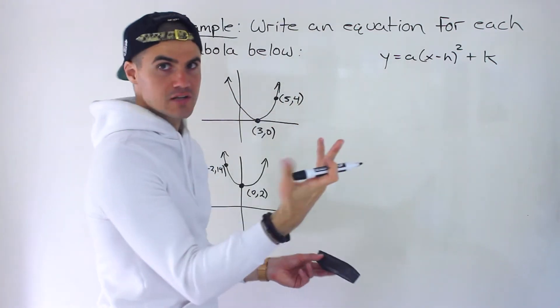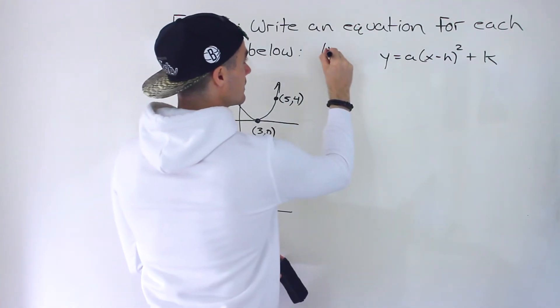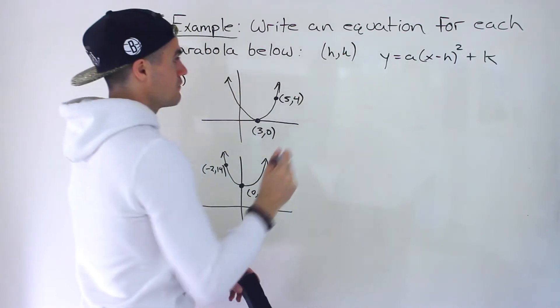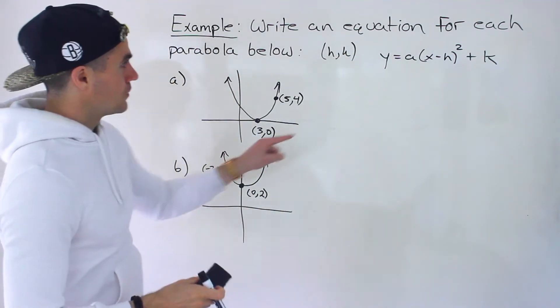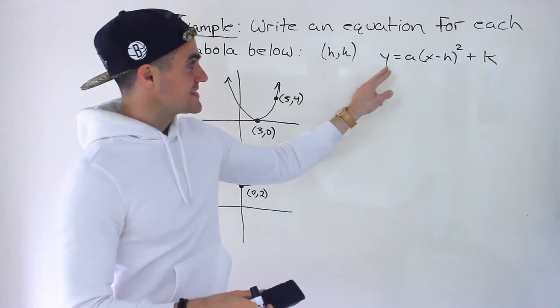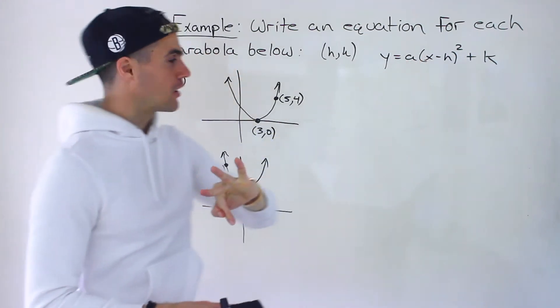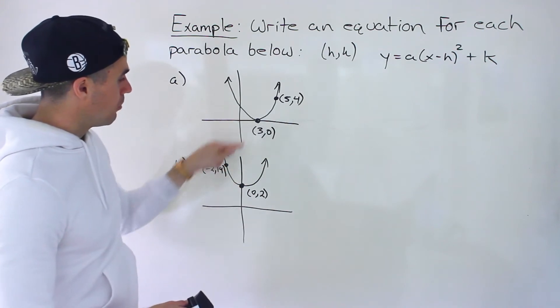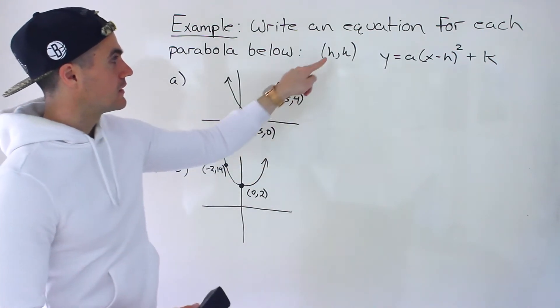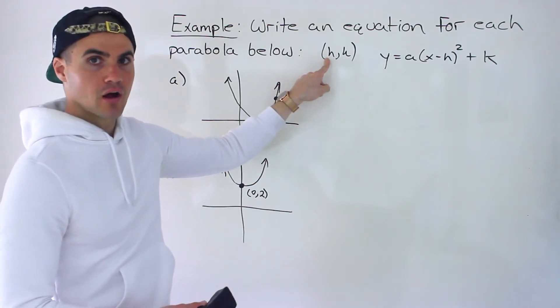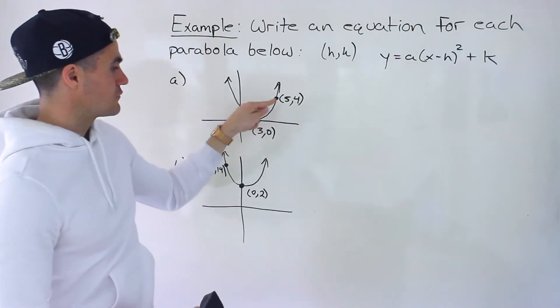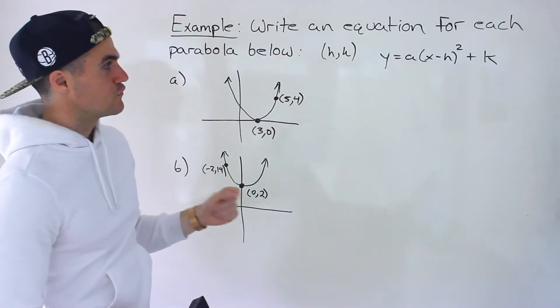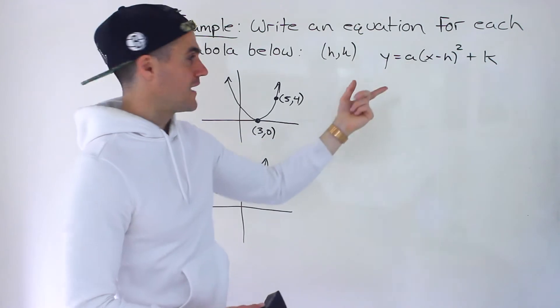Because remember, for a vertex form, where does the vertex lie? It lies at the H and K value. So if we find the constants in this format, the A, H, and K, we still have three constants to find. But because we're given the vertex, one point automatically gives us two of the constants. And then we just have to use the other point to find that remaining A value.